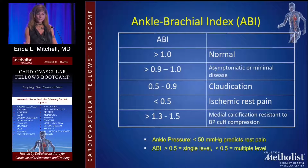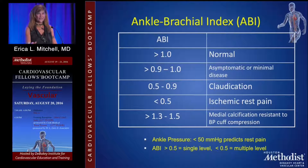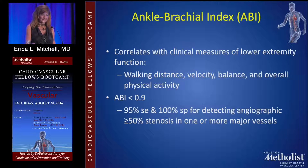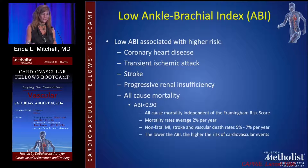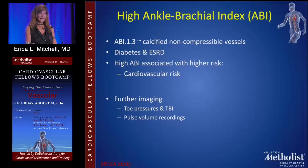A normal ABI is greater than 1.0, although greater than 1.3 is not normal. ABI drops approximately 0.3 per lesion, so the lower the ABI, the more lesions present and the worse the symptoms. ABI correlates with walking distance, balance, overall physical activity, and also correlates with coronary artery disease risk, stroke, progressive renal insufficiency, and all-cause mortality — the lower the ABI, the greater the risk of death.